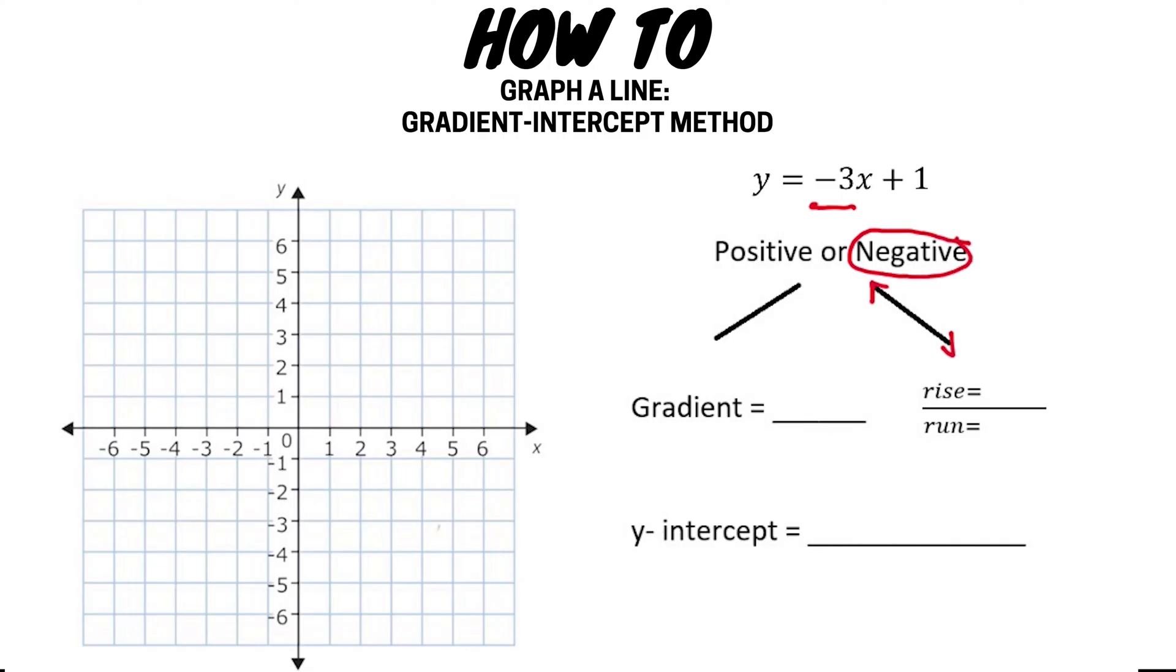Okay, so let's now fill in that the gradient will be negative three. Now to write a whole number as a fraction we just write it with a denominator of one. So to write negative three in rise over run form, we will have a rise of three and a run of one. And this time we will run to the left as the gradient is negative and we want to create a negative line. Our y-intercept is going to be positive one.